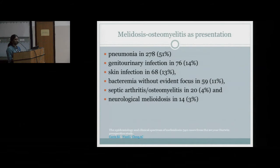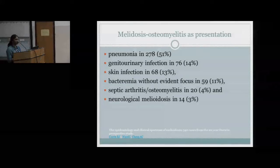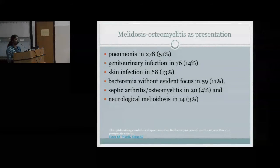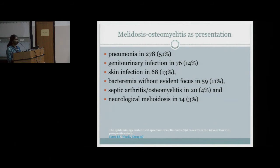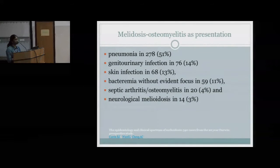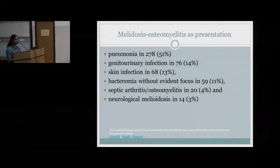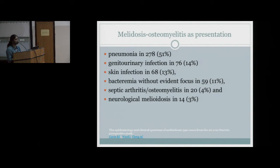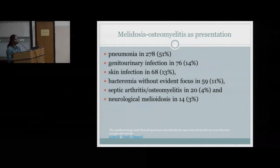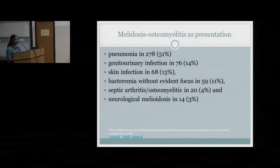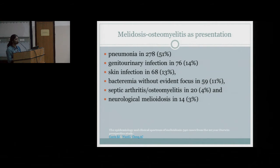Osteomyelitis was the primary presentation of melioidosis in this case. According to the Darwin study, the most common presentation of melioidosis is pneumonia at almost 50%, followed by genitourinary tract infection at 14%, skin infection at 13%, and bacteremia without focus at 11%. Septic arthritis or osteomyelitis accounts for only 3 to 4%.